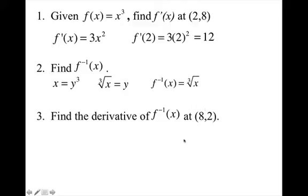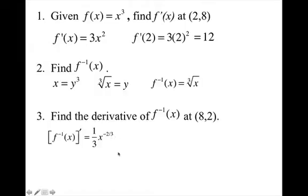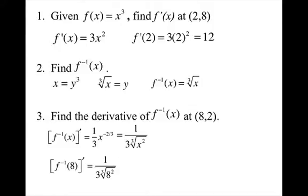The cube root of x is the same as x^(1/3). Taking the derivative gives (1/3)x^(−2/3), which is the same as 1 over 3 times the cube root of x squared. Plugging in 8: the cube root of 8 is 2, and 2 squared is 4, so we get one-twelfth.